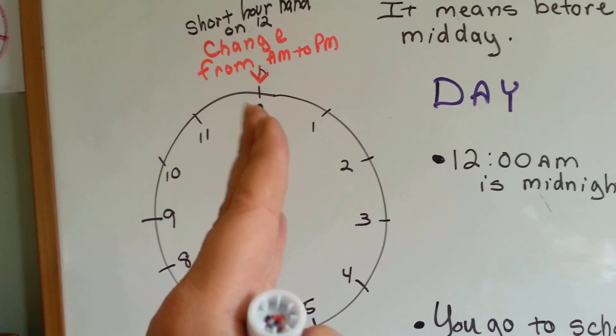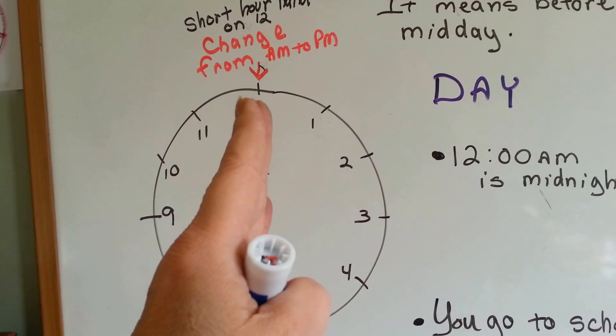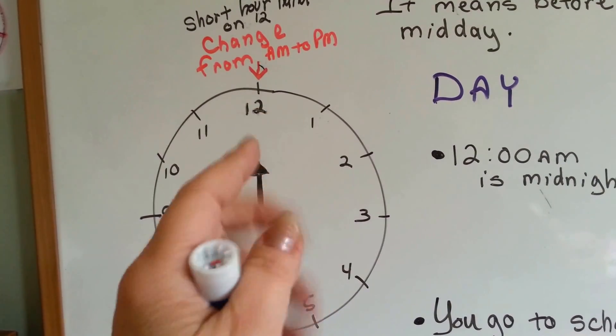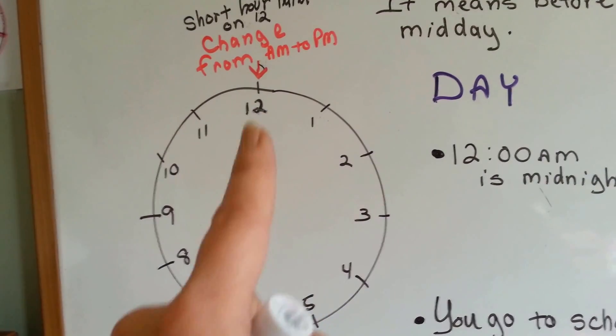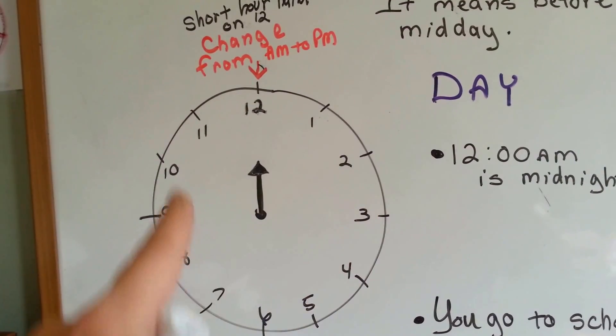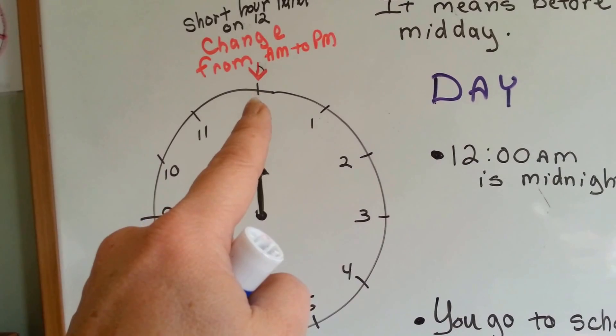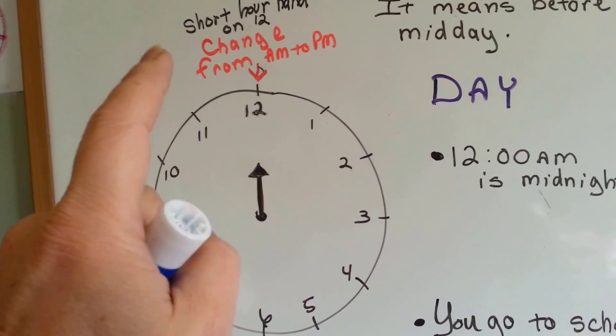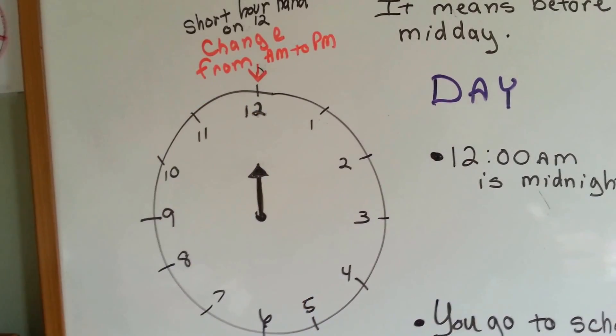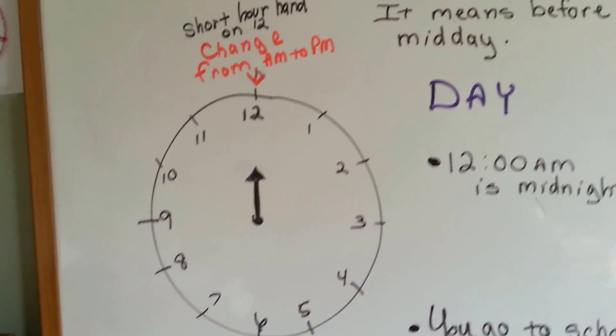In the middle of the night, it's midnight and you're sleeping, and now it changes to AM again. So at lunchtime it changed to PM when you're at school. So every time this hour hand goes around and hits the 12, it changes from AM to PM.